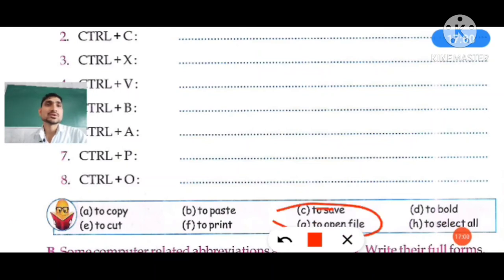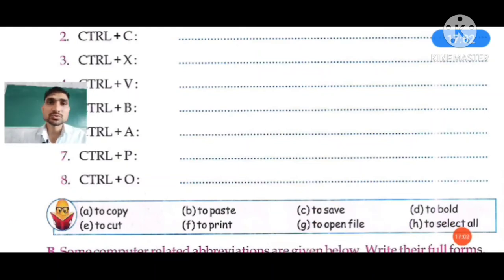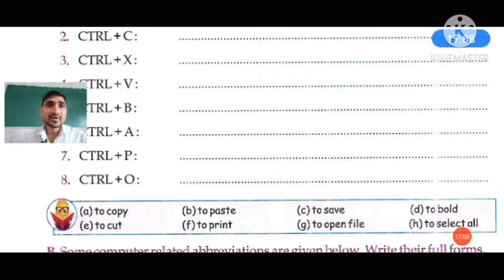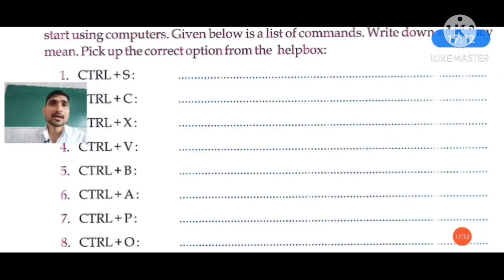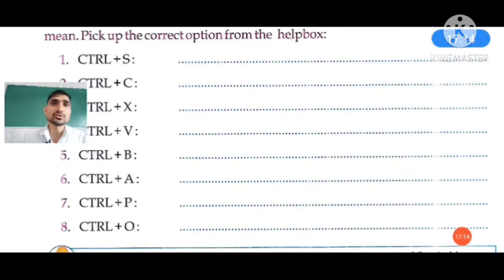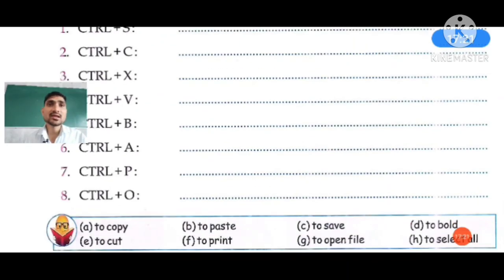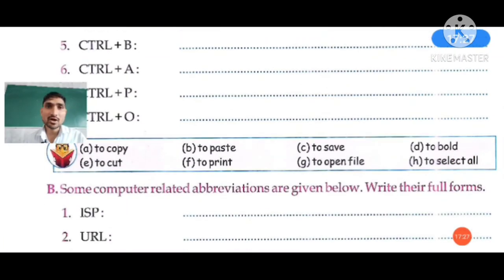Let me repeat once: Ctrl+S means save, Ctrl+C means copy, Ctrl+X means cut, Ctrl+V means paste, Ctrl+B means bold, Ctrl+A means select all, Ctrl+P means print, and Ctrl+O means open file.